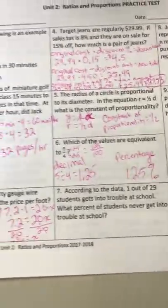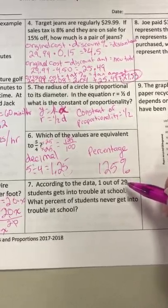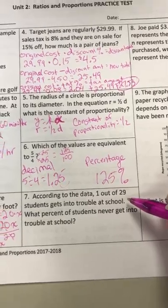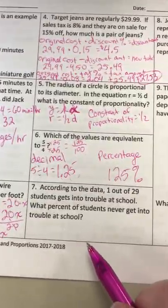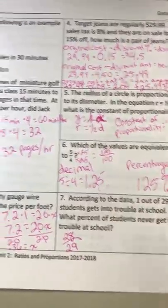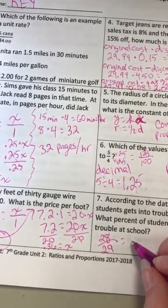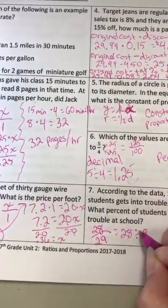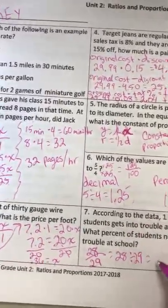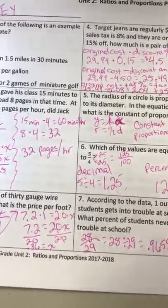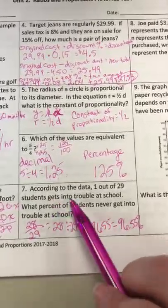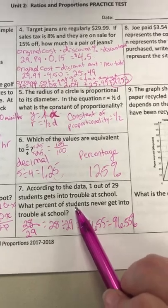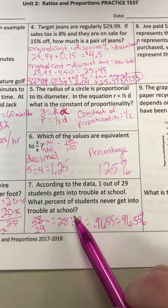Number seven: According to the data, one out of 29 students gets into trouble at school. What percent of students never get into trouble? Since 29 is not easy to convert to a fraction over 100, convert to a decimal first, then to a percentage. We want students who never get into trouble: 29 minus 1 equals 28, so we have 28 over 29. 28 divided by 29 equals 0.9655, which equals 96.55%.